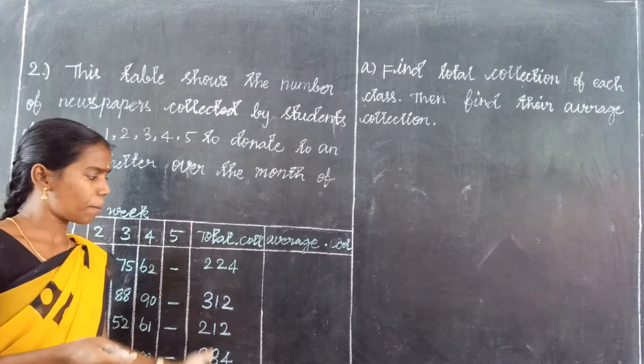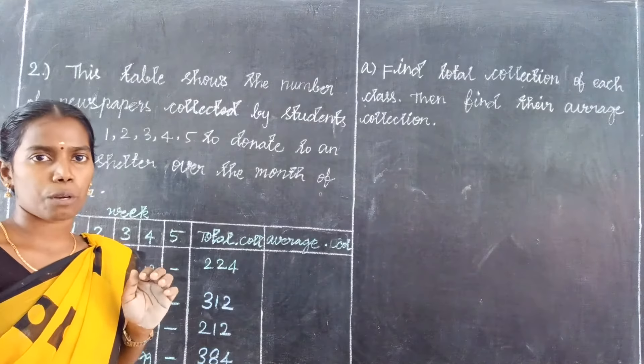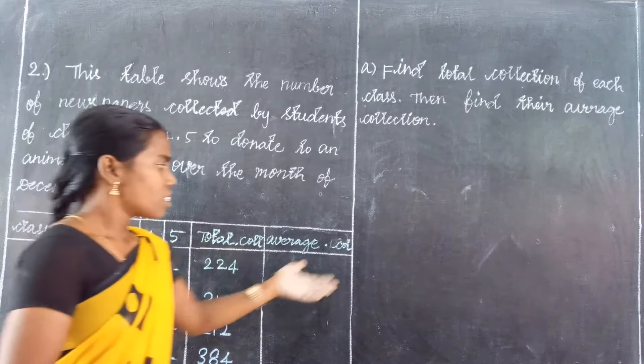Welcome students. In previous videos we found the total values, and in this video we will find the average. The total values are not the average — average means finding every number's mean. First, apply the total values in the box, and then in the second box find the average.